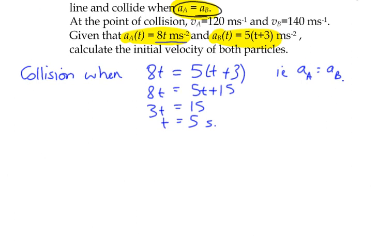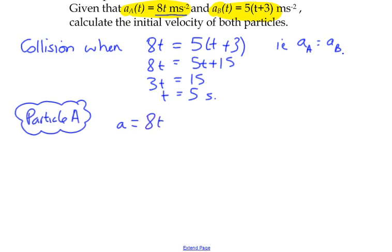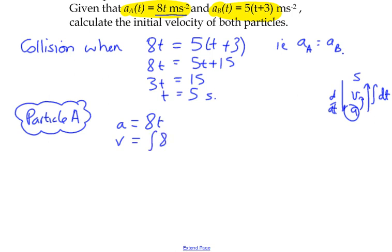The collision happened at five seconds, but we're looking for the initial velocity. We know the velocity at the point of collision, so let's look at particle A. We know that the acceleration at the point of contact is 8t, and we're looking for its velocity function. Displacement, velocity, and acceleration are related by derivatives and integration — to get from acceleration to velocity we need to integrate 8t with respect to t.